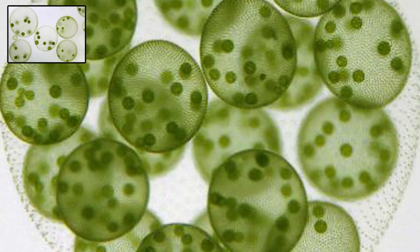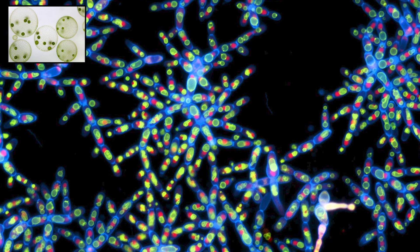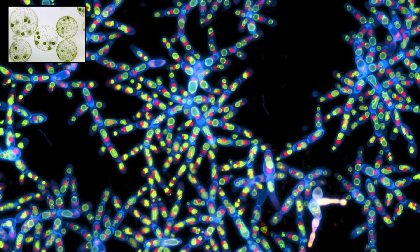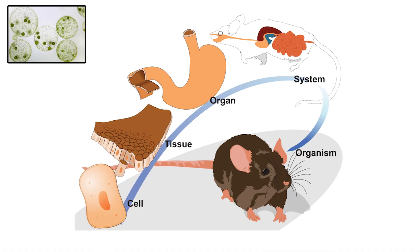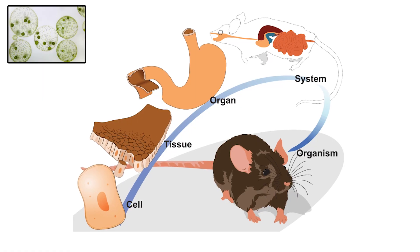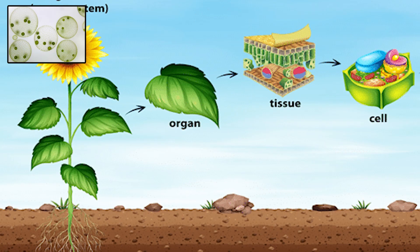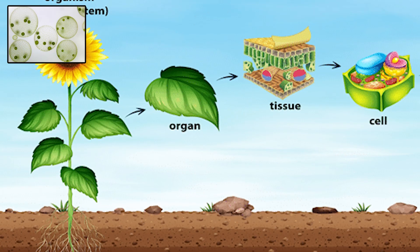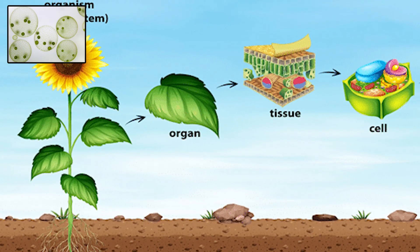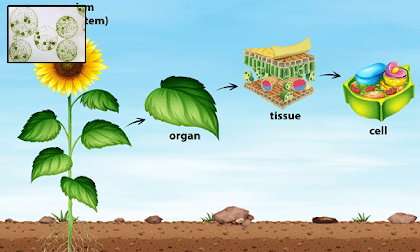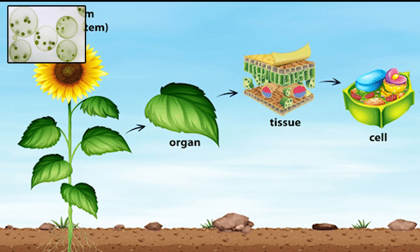Multicellularity allowed organisms to become far more complex, evolving specialized tissues and organs that perform unique tasks. Animals, for instance, developed organs such as hearts, brains, and stomachs. Plants evolved roots, stems, and leaves, each specialized for absorbing nutrients, structural support, and capturing sunlight, respectively.